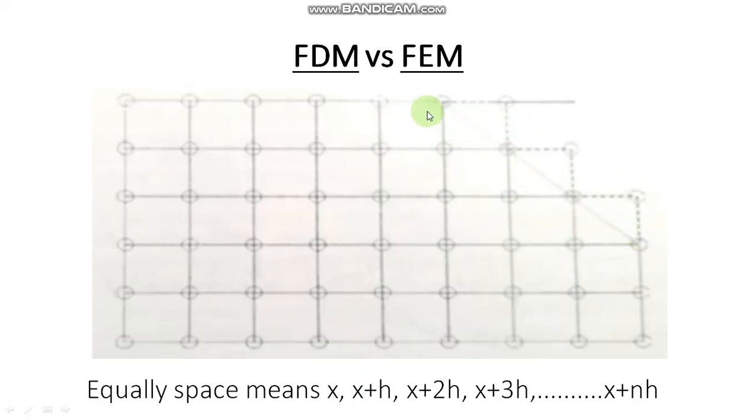If you look at this structure, there is a straight line. So in FDM, from this node to this node, this node to this node, and directly to this node. Whatever the points are there, we have to apply approximating function. So this way FDM. Now FDM versus FEM.